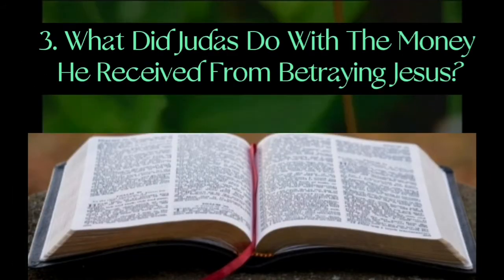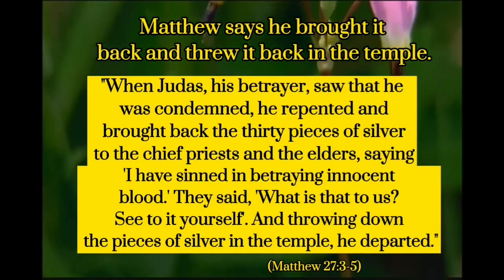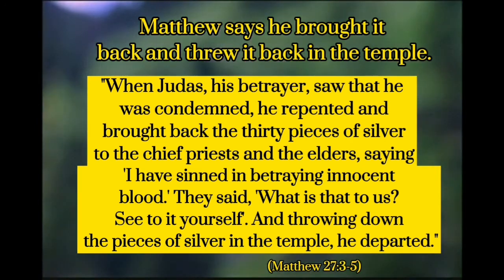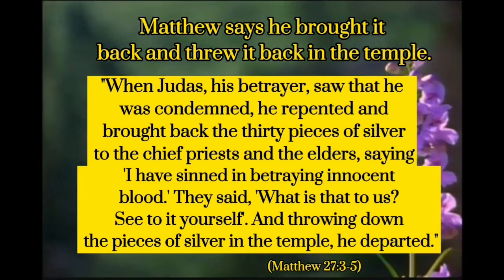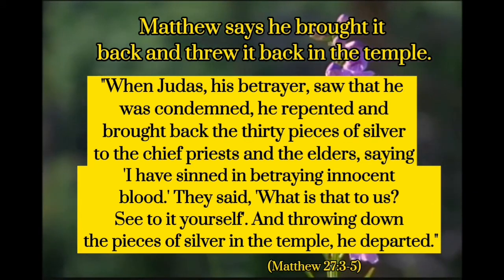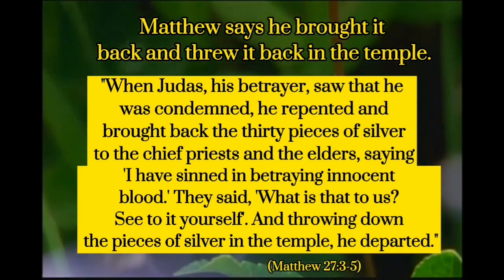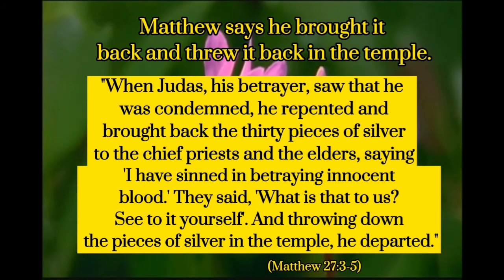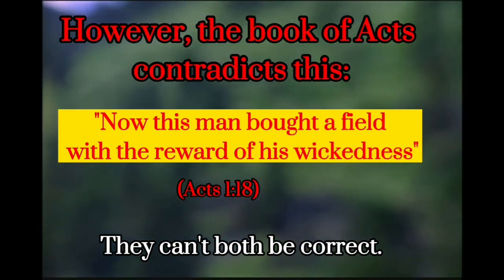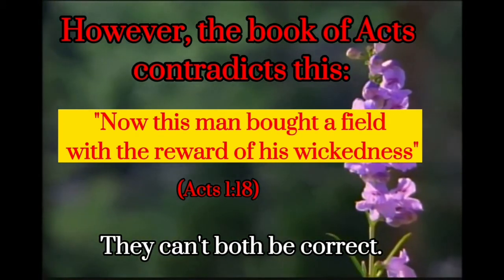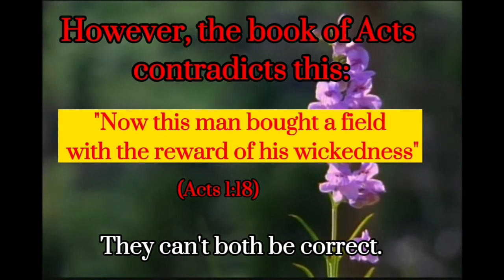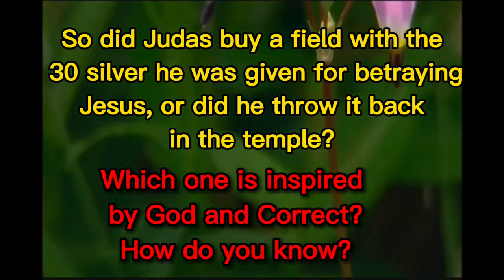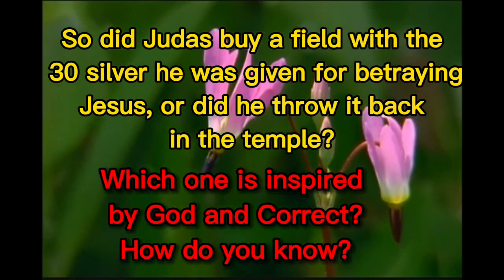What did Judas do with the money he received from betraying Jesus? Matthew says he brought it back and threw it back in the temple: 'When Judas, his betrayer, saw that he was condemned, he repented and brought back the 30 pieces of silver to the chief priests and the elders, saying, I have sinned in betraying innocent blood. They said, What is that to us? See to it yourself. And throwing down the pieces of silver in the temple, he departed.' Matthew chapter 27 verses 3 to 5. However, the book of Acts contradicts this: 'Now this man bought a field with the reward of his wickedness.' Acts chapter 1 verse 18. They can't both be correct. So did Judas buy a field with the 30 silver, or did he throw it back in the temple? Which one is inspired by God and correct? How do you know?